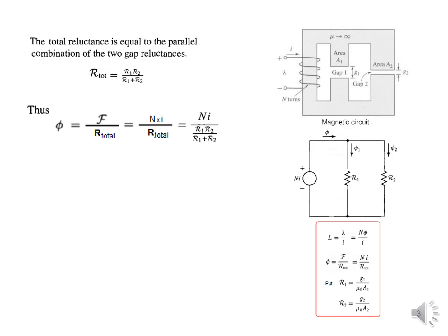F is the magnetomotive force which is N into i. And for R_total we write this value here.